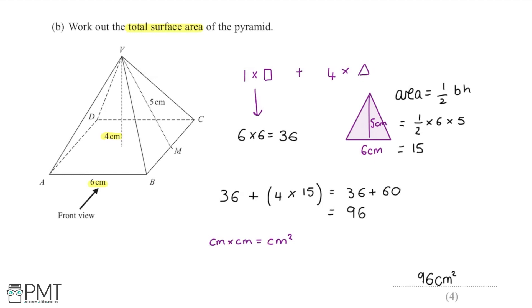Going back through to see exactly where each mark is picked up: the first mark is for working out the area of one of the triangular faces — getting that 15. The second mark is for working out the total surface area by taking 4 multiplied by 15 and adding on 6 multiplied by 6. The third mark is for obtaining the correct answer of 96. And the fourth mark is for putting the units on the end — centimetres squared — which gains the final mark in this question.